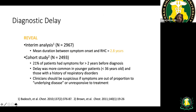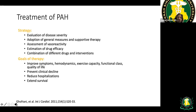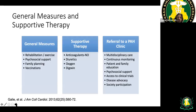The REVEAL registry — the largest registry with more than 3,500 PH patients — shows a diagnostic delay of approximately three years between onset of symptoms and right heart catheterization. This delay still occurs today; patients often see multiple physicians before reaching a PH center, arriving already far advanced in disease and inadequately treated.